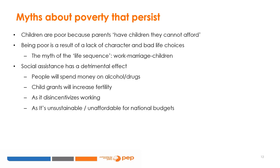Even if we know all this, some myths around poverty keep persisting. You may have heard that children are poor because parents make poor reproductive choices, or because they do not follow a certain path such as education, then employment, then marriage, and only then have children. You may also have heard that social assistance is not good because it has negative effects on poor people — it encourages dependency and disincentivizes work, people spend money on alcohol and drugs, child grants will increase fertility, and that ultimately it's unsustainable and unaffordable for national budgets.